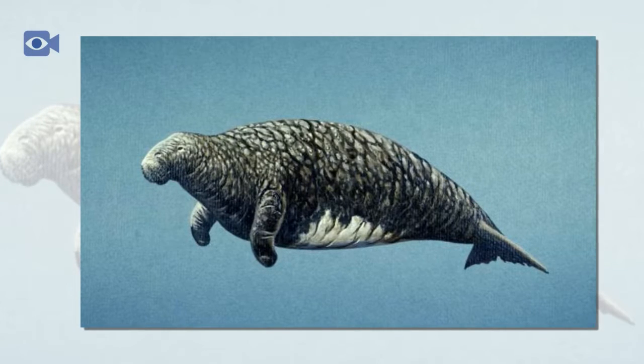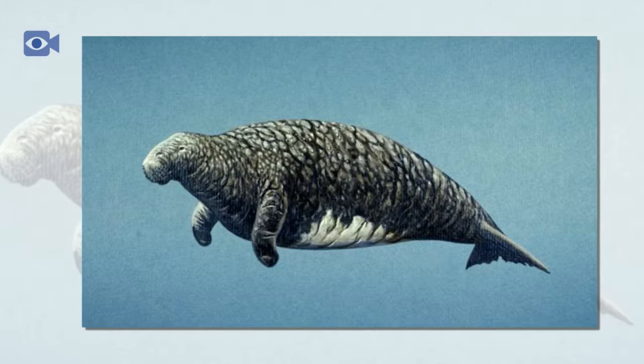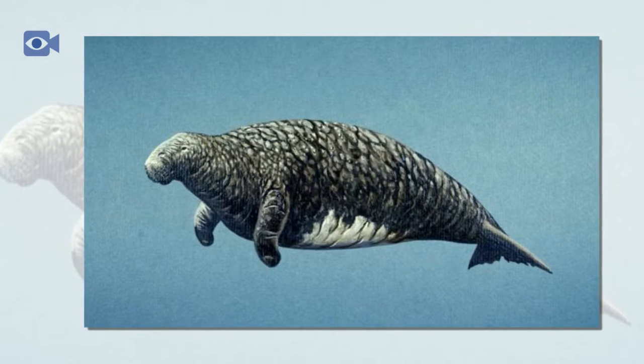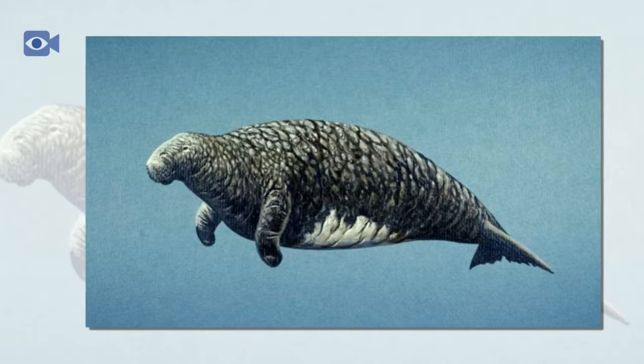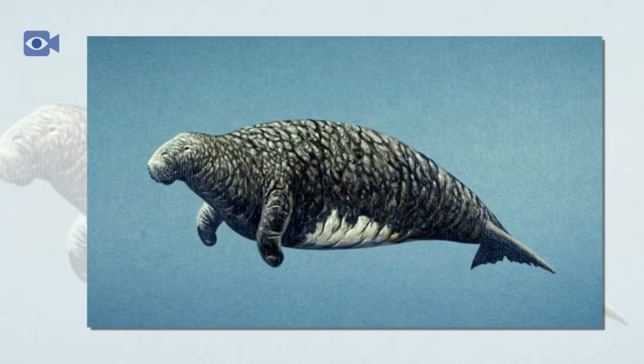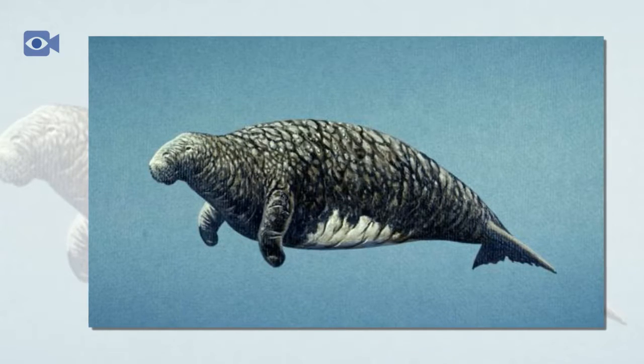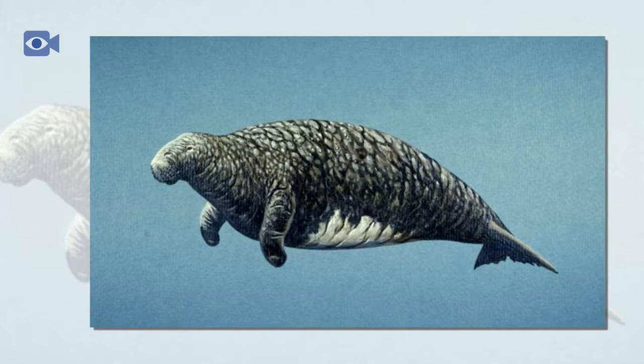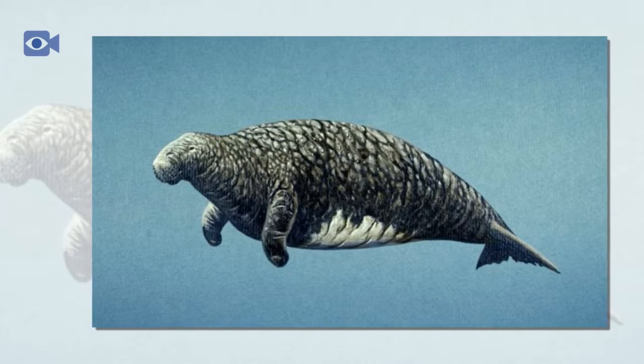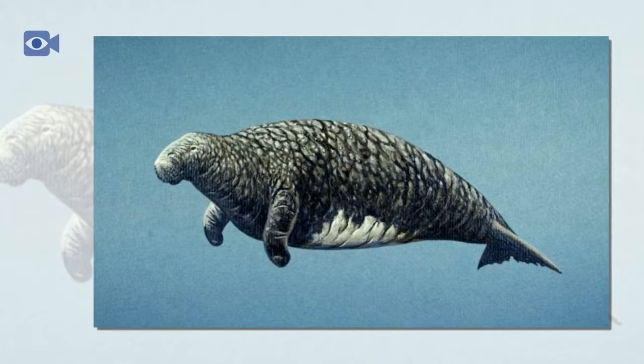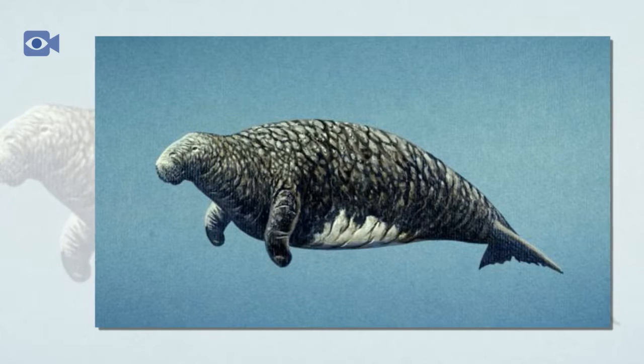Before being discovered by humans, the Steller's sea cow would have had very few predators within its watery world. Large shark species would have been the only predators able to tackle such an enormous meal, but none were more successful at hunting this enormous sea cow than humans, who wiped out the entire species in just 17 years.